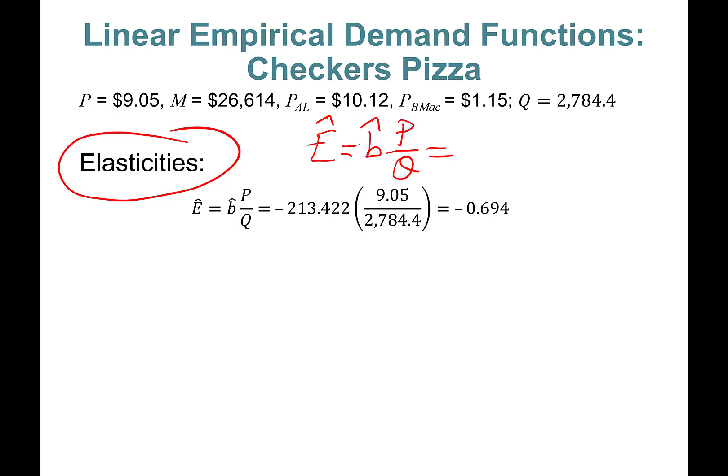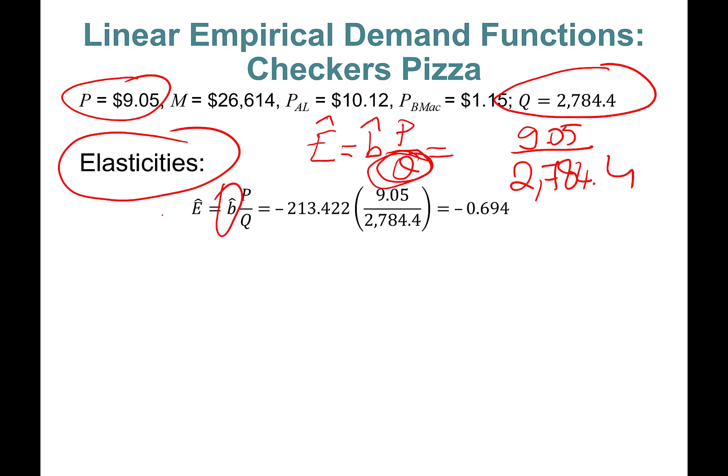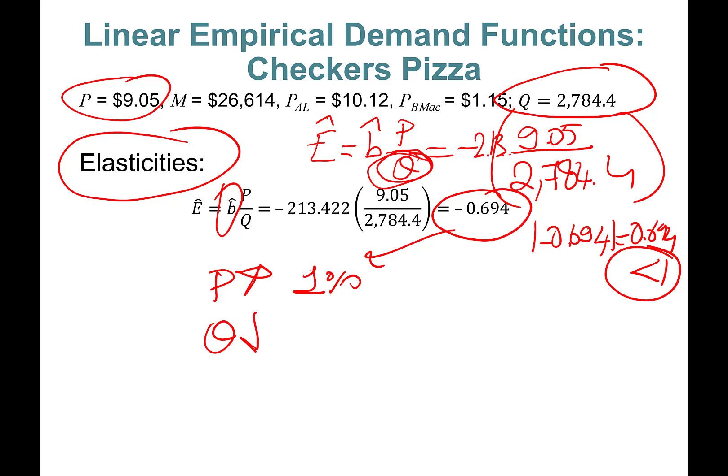Times price divided by quantity. The last step we did, we found quantity, and we're given the price. We're going to put $9.05 on top, Q is 2,784.4 from the previous part we calculated. And what's my B-hat? I found it from the estimation right here—the coefficient estimate of the own price is negative 213. So you plug in negative 213. If you calculate this, you're going to find negative 0.694. In absolute value, this is 0.694, less than one—inelastic demand. In English, this means if you increase price by one percent, quantity will go down by 0.694 percent.